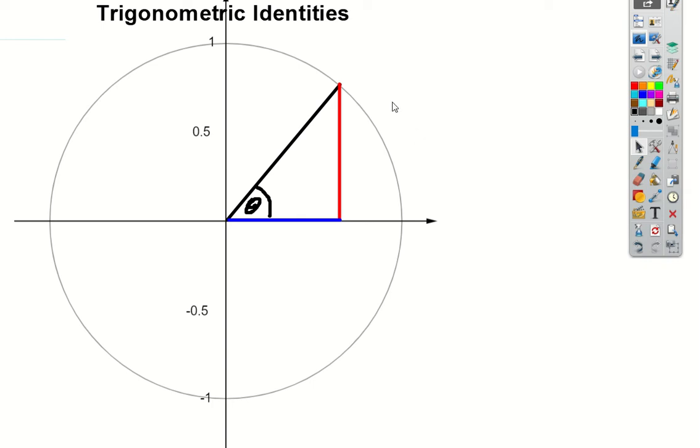So I want to draw your attention back to the unit circle construction that we started off with. Here it is, unit circle. And if you remember, we start over here at 1, 0, and then we rotate around an angle of theta around this way, anticlockwise.